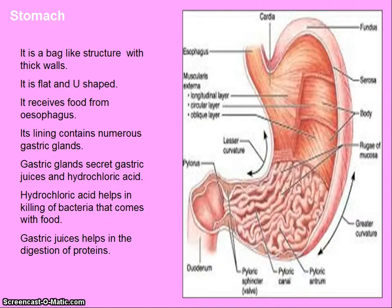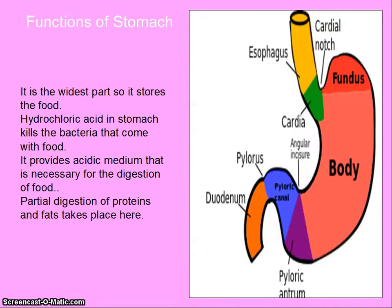Stomach is a bag-like structure with thick walls. It is flat and U-shaped. It receives food from esophagus. Its lining contains numerous gastric glands. Gastric glands secrete gastric juices and hydrochloric acid. Hydrochloric acid helps in killing bacteria that comes with food. Gastric juices help in the digestion of proteins. Functions of stomach: it is the widest part so it stores the food; hydrochloric acid kills bacteria; it provides acidic medium necessary for digestion; and partial digestion of proteins and fats takes place here.